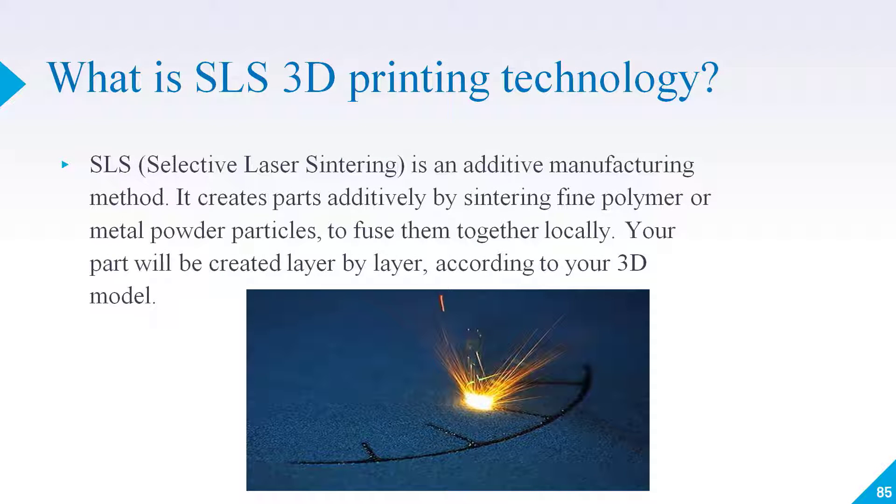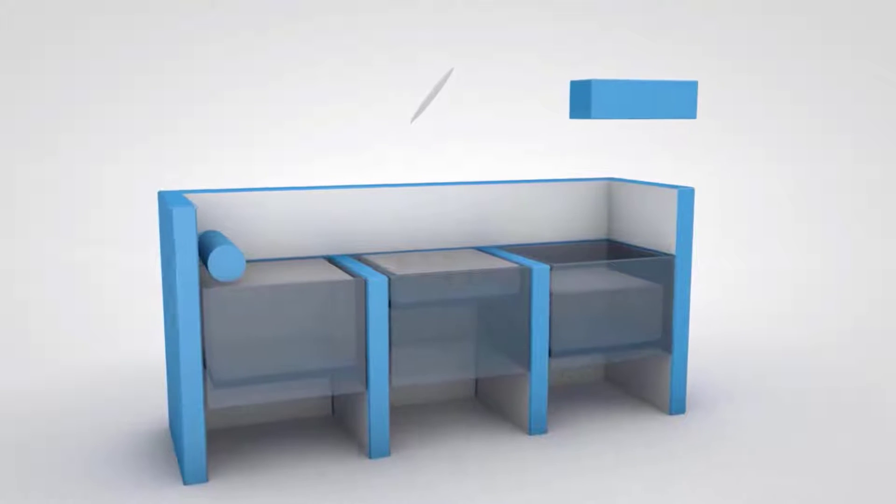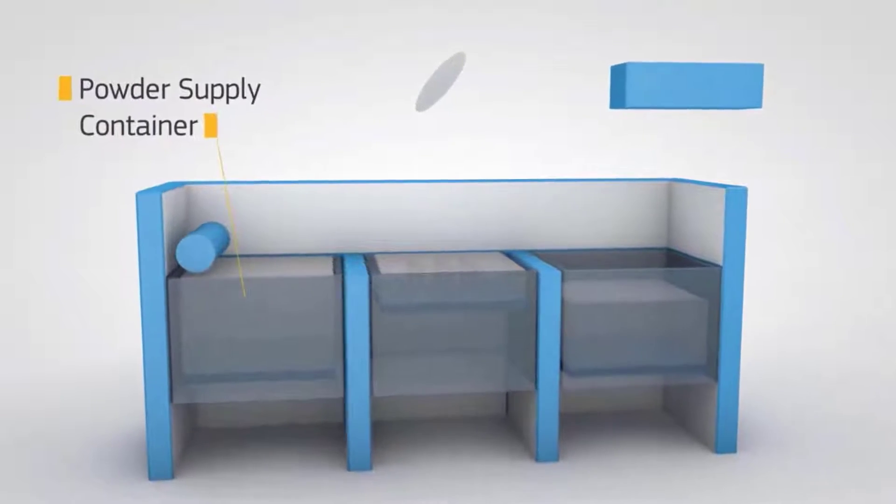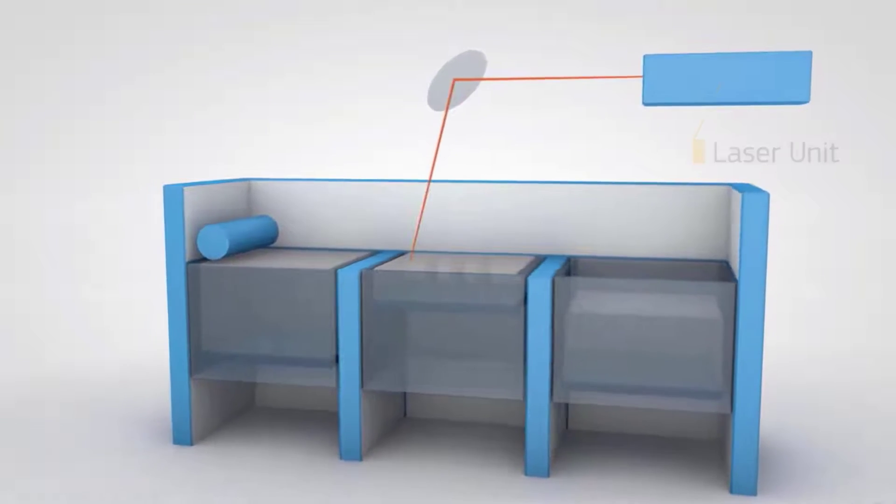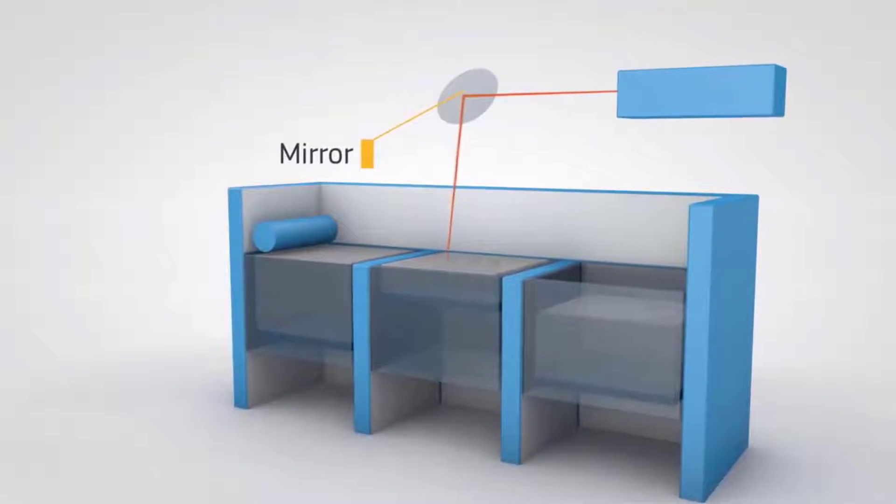SLS 3D printing technology is basically an additive manufacturing method. It creates parts additively by sintering fine polymer or metal powder particles. As I told you, we can use polymer powder or we can use metal powder.